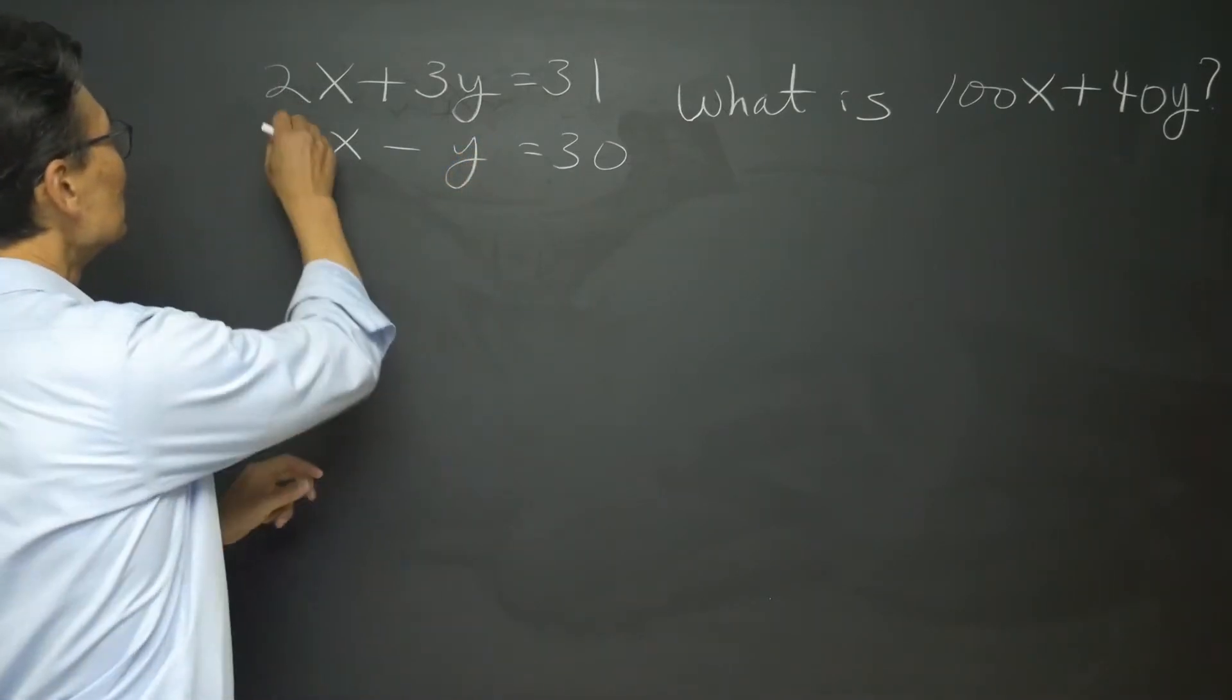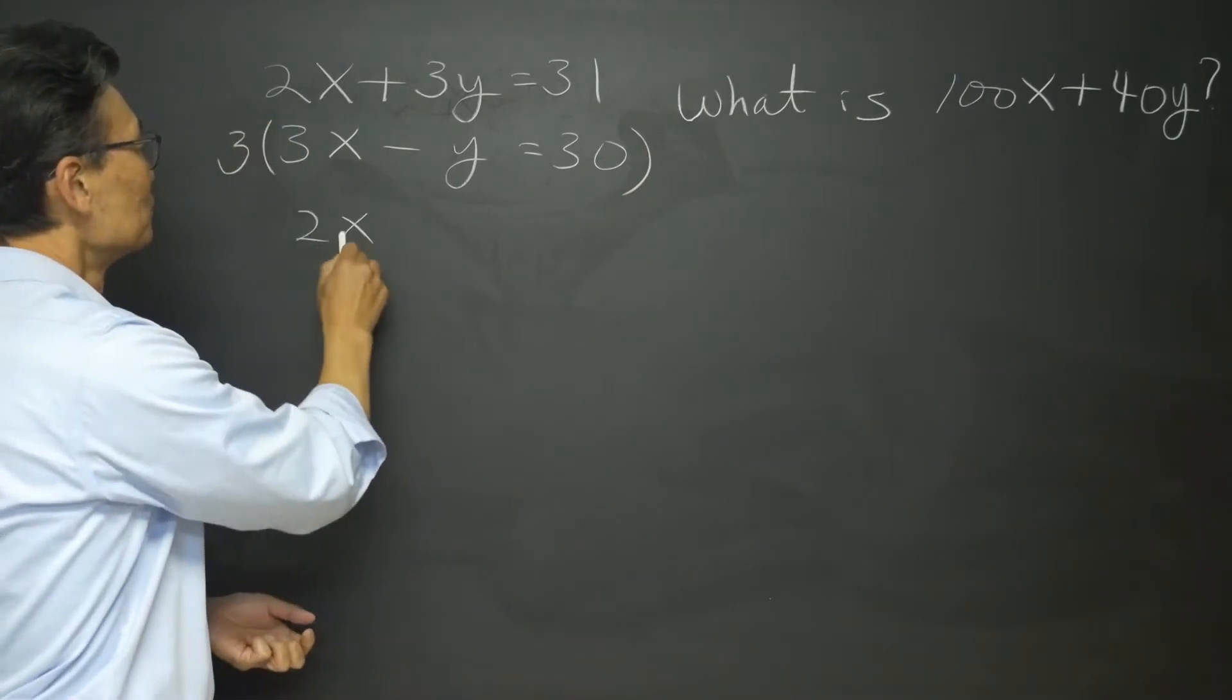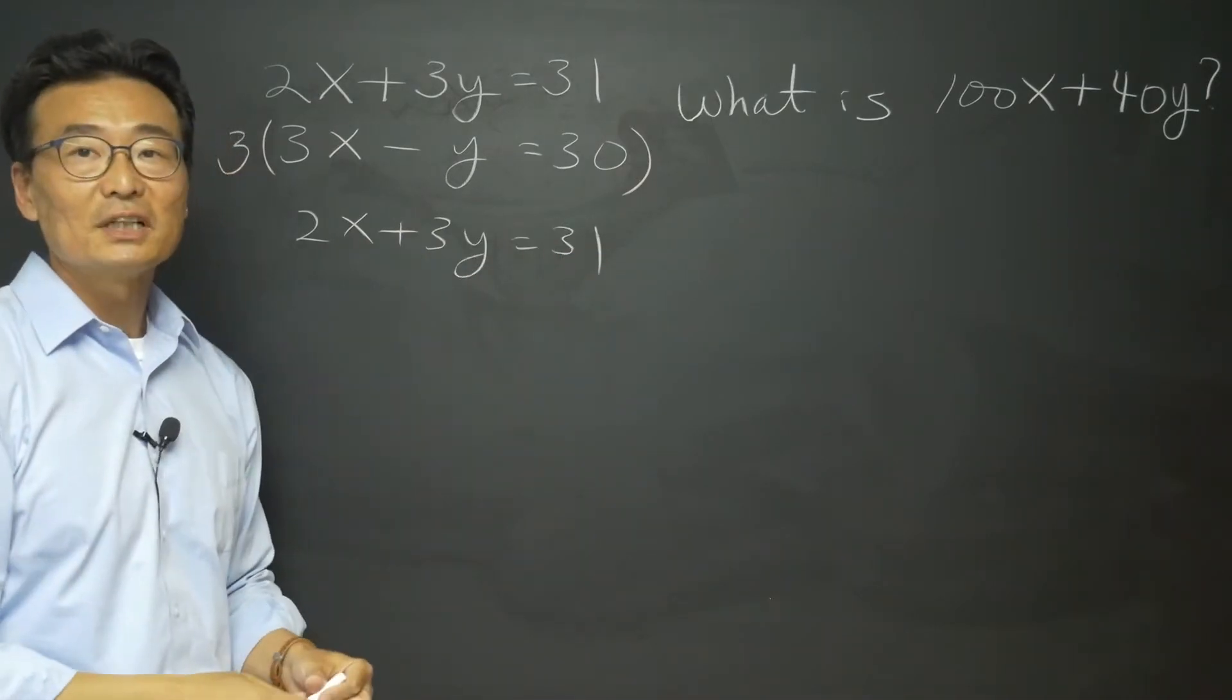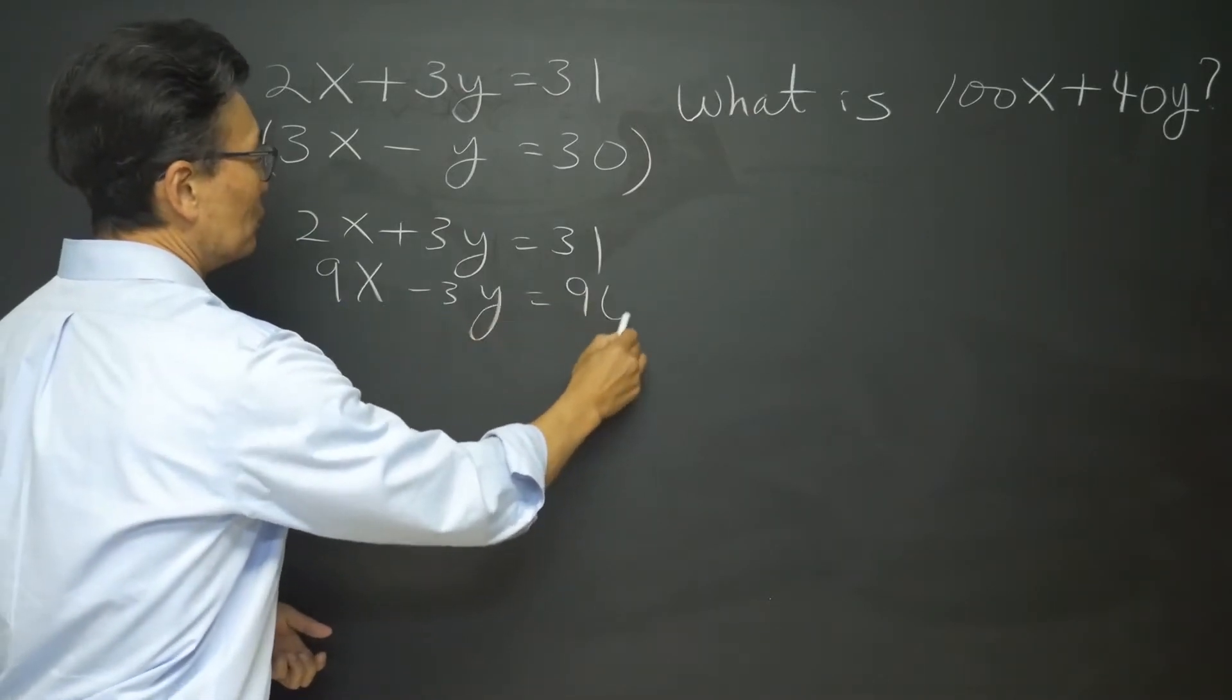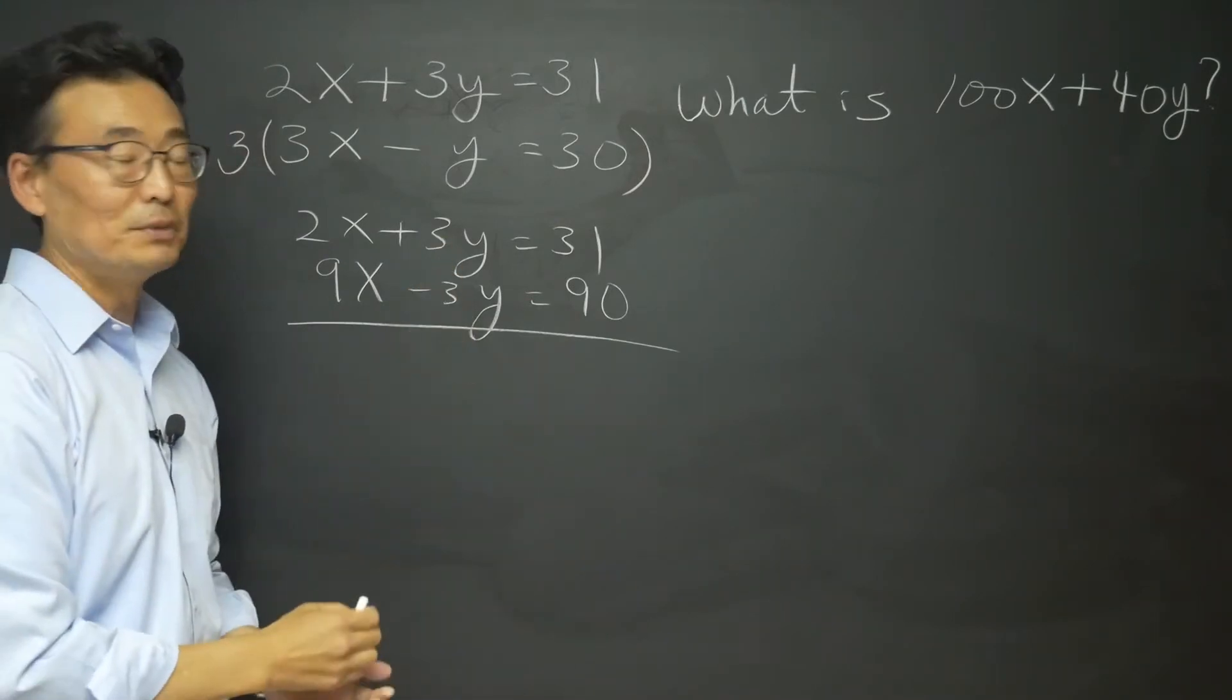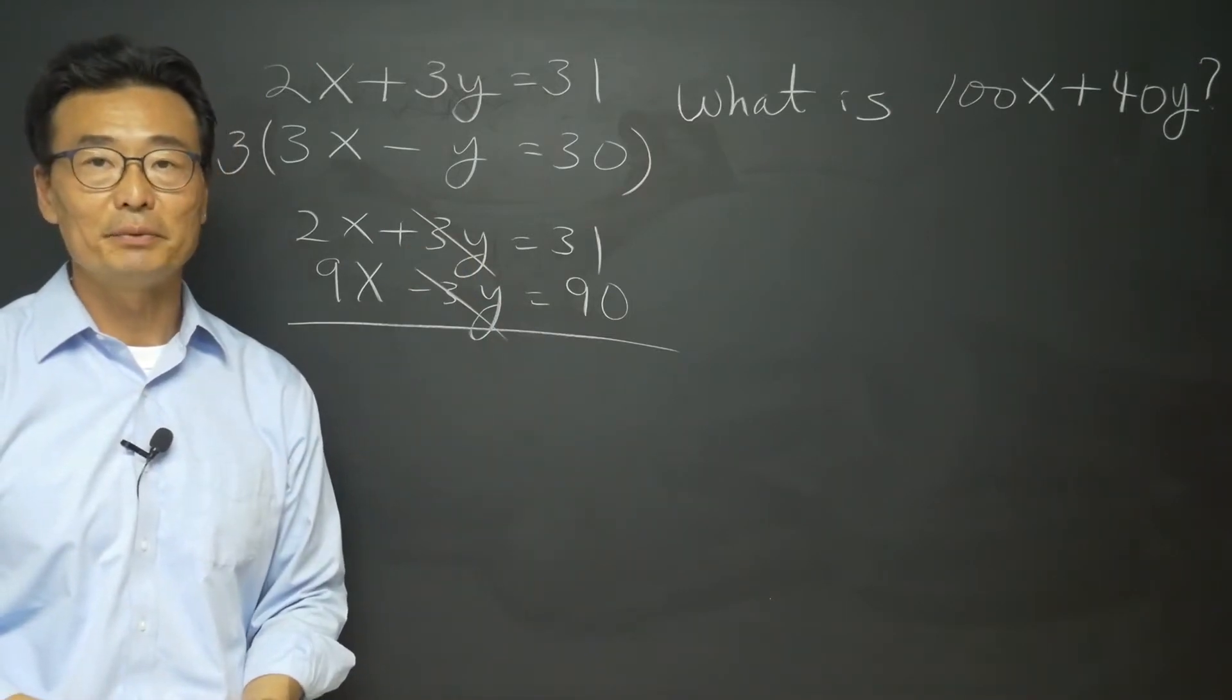multiplying the second equation by 3. So the first equation we leave it alone, the second equation we multiply by 3. If we add up and down, meaning if we combine the first and the second equation, we get to cross out the positive 3y and the negative 3y, giving us